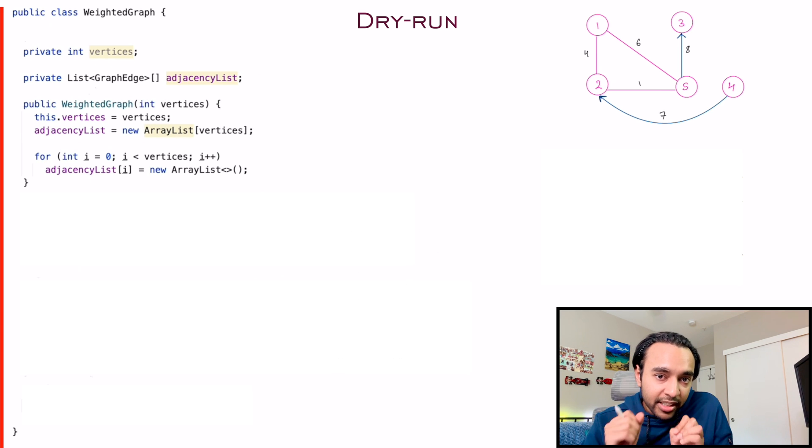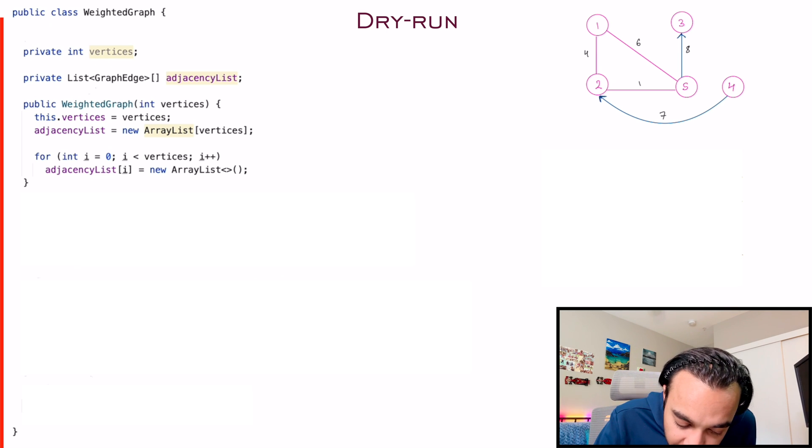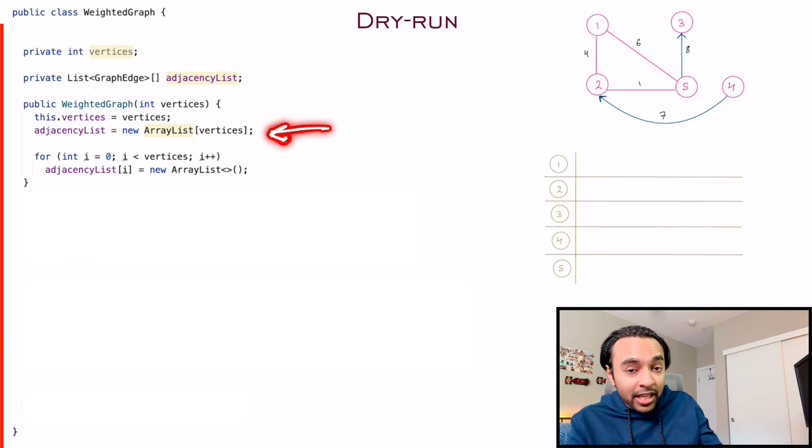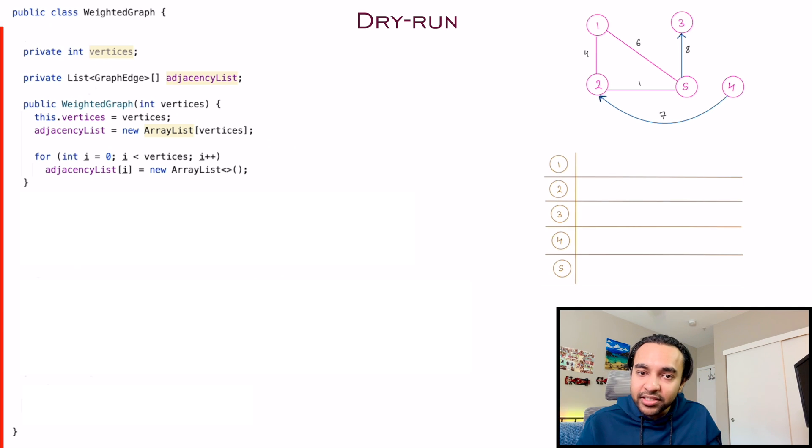In your class constructor, what do you do? You will just ask how many nodes does this graph have? So when you're initializing your weighted graph, what do you do? First of all, you fix your vertices, and then you create a new array list based upon the number of vertices that you have.